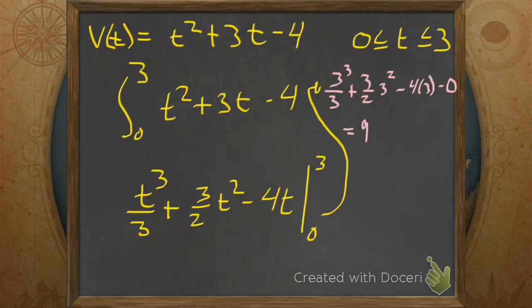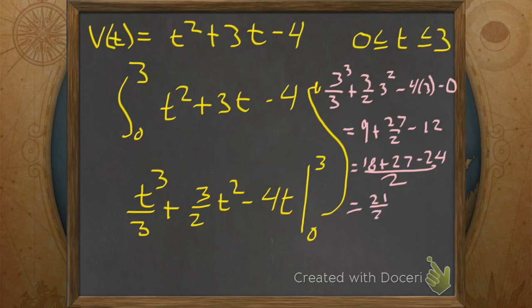I'll do it. 9 plus 27 over 2 minus 12. Common denominator, that's 18 plus 27 minus 24 over 2. That's 21 over 2.